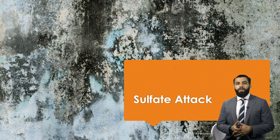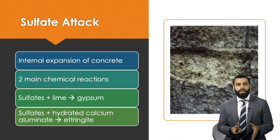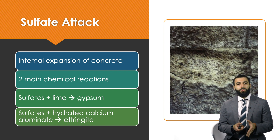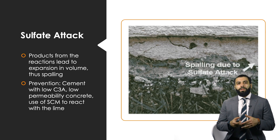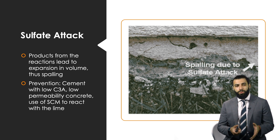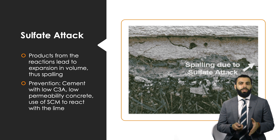The final chemical defect is sulfate attack on the concrete member. A sulfate attack leads to internal expansion of the concrete. Two main reactions take place: sulfates react with lime to produce gypsum, and sulfates react with hydrated calcium aluminate to form ettringite. Both reaction products lead to an increase in volume, causing the spalling visible in the image. To prevent this, we use cement with low C3A content, cement with low permeability, and SCMs — so that the SCMs react with the lime instead of the lime reacting with the sulfates.